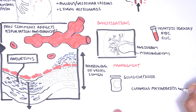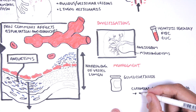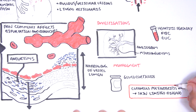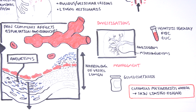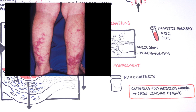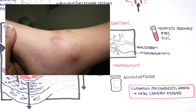It is important to know about cutaneous polyarteritis nodosa. Whereas classic systemic polyarteritis nodosa commonly affects the kidneys, muscles, nerves, GI tract, and skin, vasculitis in cutaneous polyarteritis nodosa is skin-limited.